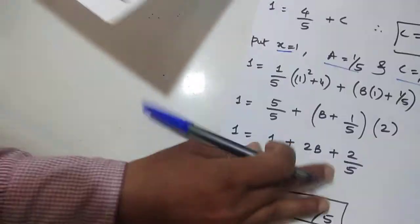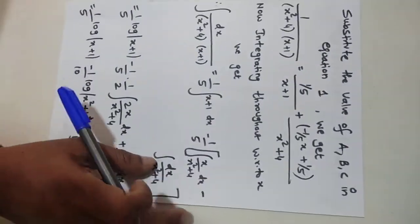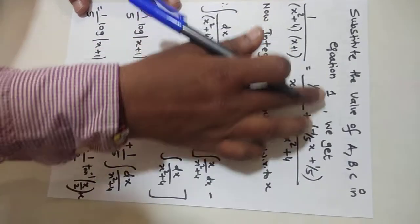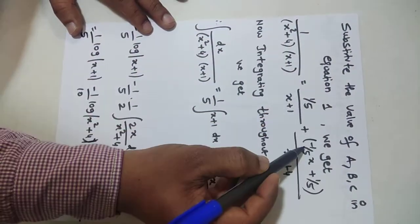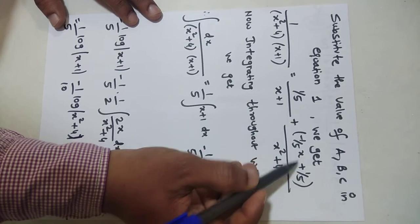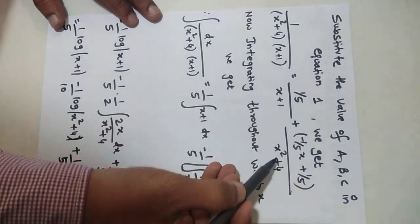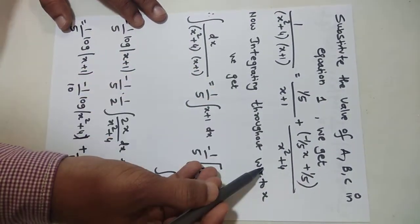Once you have the values of A, B, and C, substitute them back into equation 1. That is, replace A with 1/5, and Bx + C with the values found, and use this for the integration step.